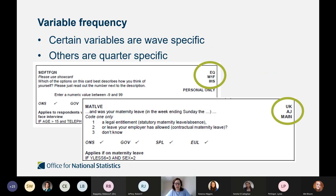In terms of how to identify which questions are asked when: certain variables are wave specific, others are quarter specific. In the user guide, you have acronyms in the top right corner — for example, W1F means the question is only asked at wave one or first contact, and AJ means the question is only asked in the quarter April to June, the second quarter of the year. This tells you what sample size you'd have for the question you want to use in your analysis.